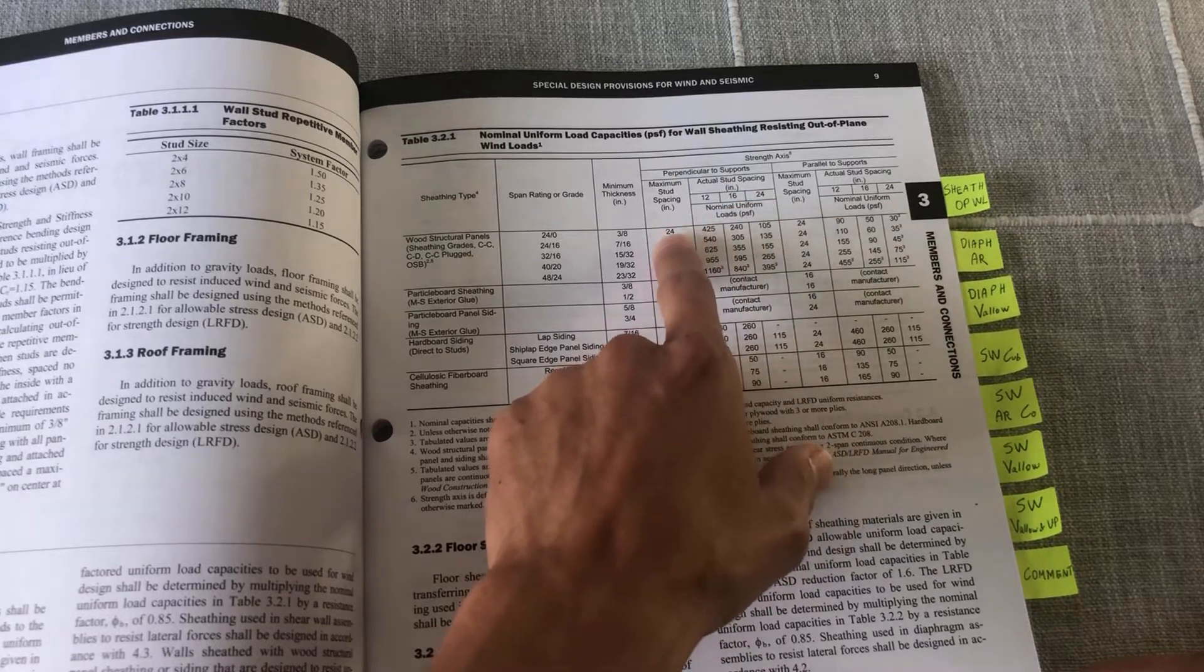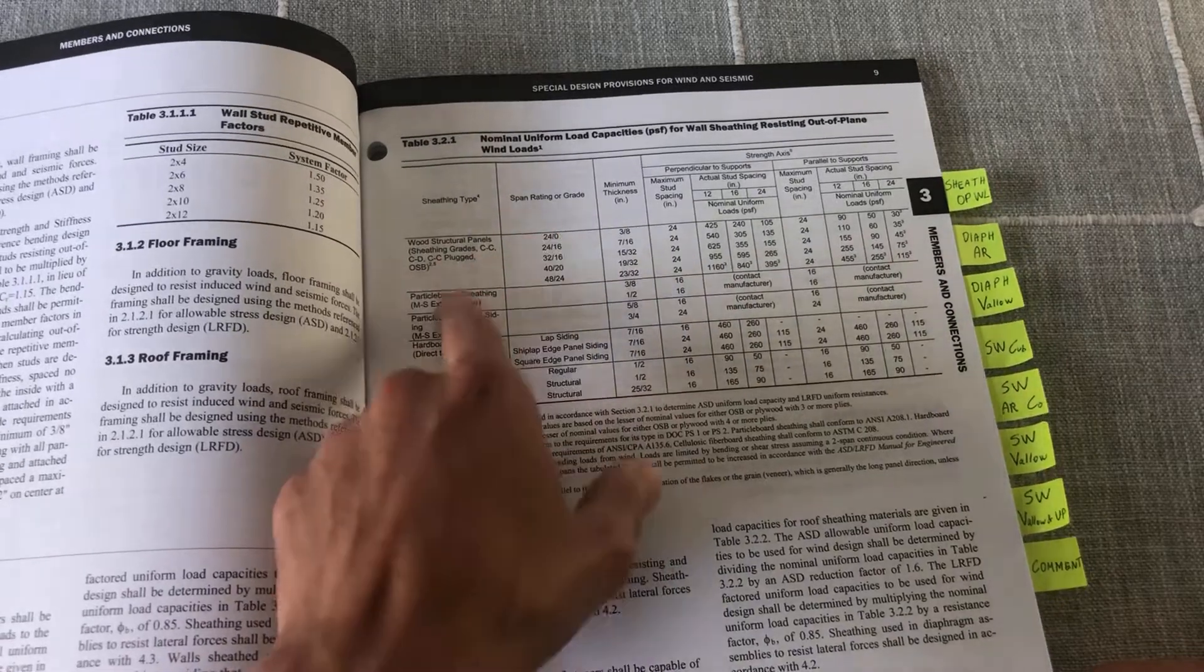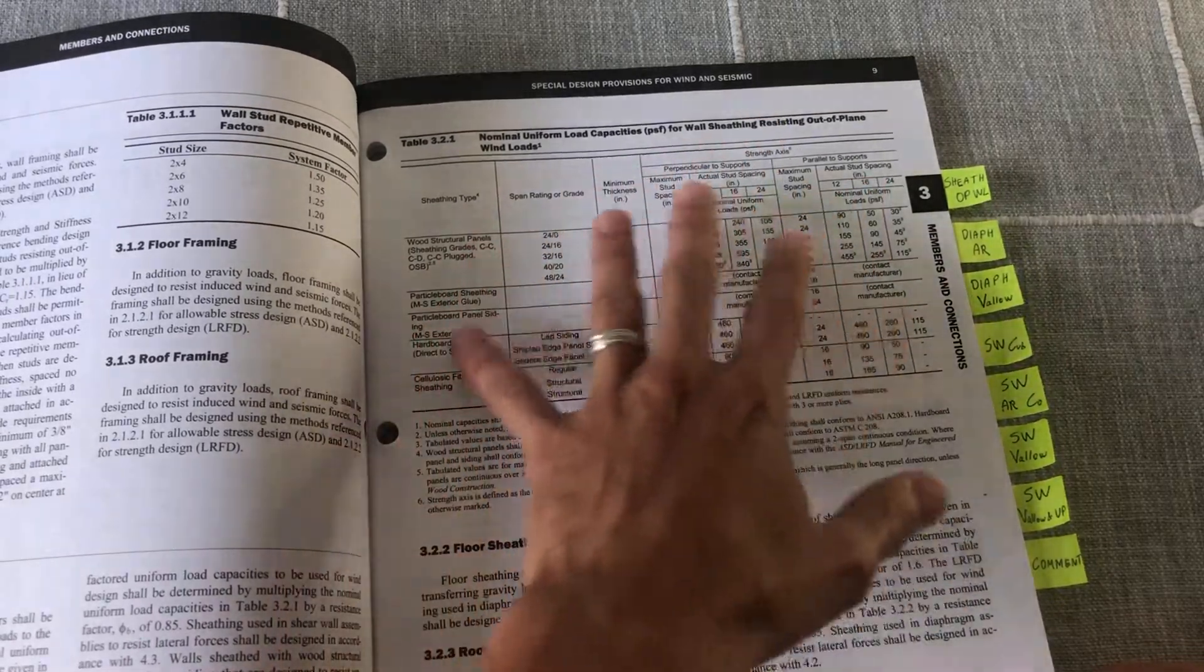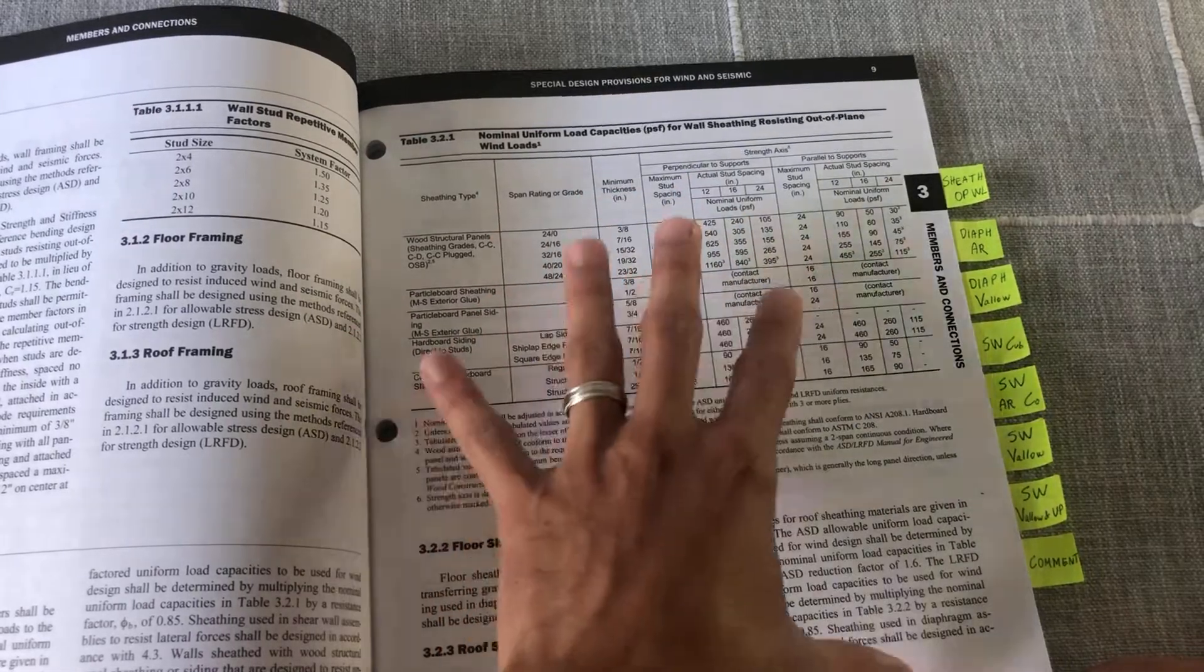Stud spacing, minimum stud spacing here, minimum thickness, the different sheathing types. So this is another table that has a lot of information and is very useful.